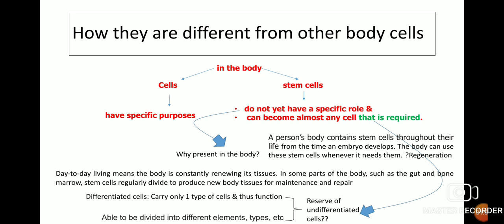Stem cells can become almost any cell that is required — meaning these are a reserve of undifferentiated cells. Differentiated cells carry only one type and thus one function, whereas undifferentiated stem cells are able to divide into different elements and types.